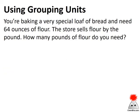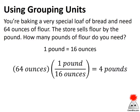Let's look at a grouping unit in action. You want to bake some bread. The recipe calls for 64 ounces of flour, but you go to the store and they don't sell flour by the ounce — they sell it by the pound. How many pounds of flour do you need? We need a conversion factor: one pound is 16 ounces. To set it up, we want ounces to cancel with ounces so we're left with pounds. So we divide by 16 — the ounces unit goes away — and we're left with four pounds of flour. That's a pretty respectable size loaf of bread.